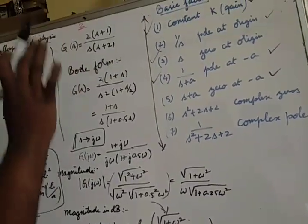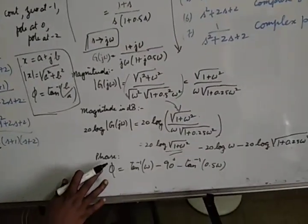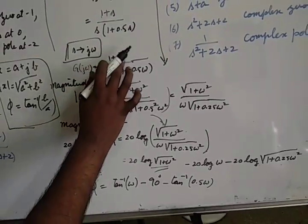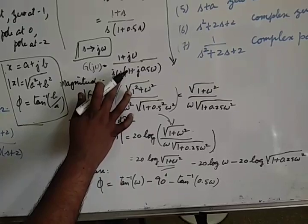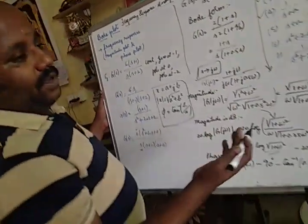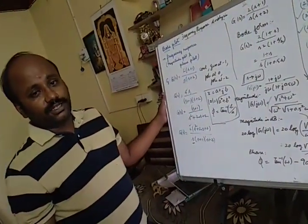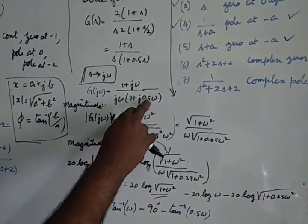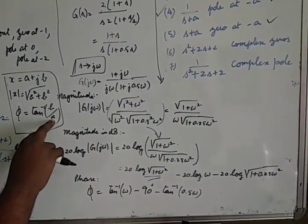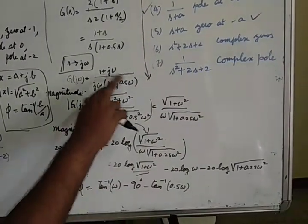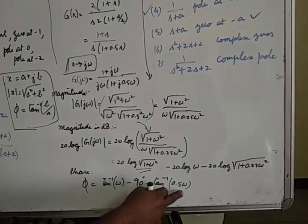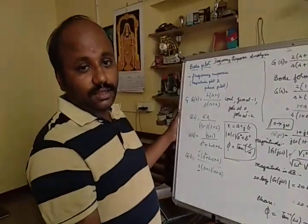Then we compute the phase angle. The phase angle of (1 + jω) is tan⁻¹(ω). The phase angle of jω is minus 90 degrees. In phase angle, division also becomes subtraction. The phase angle of (1 + j·0.5ω) is tan⁻¹(0.5ω/1) = tan⁻¹(0.5ω). Since it is in the denominator, we apply a minus sign.